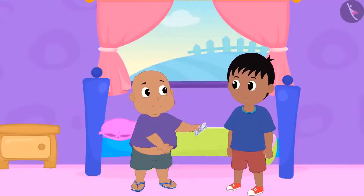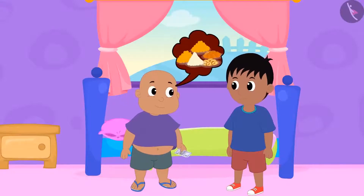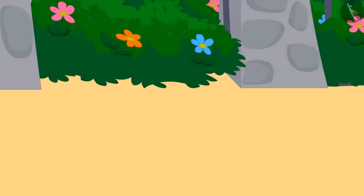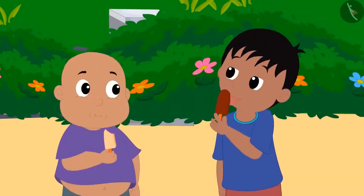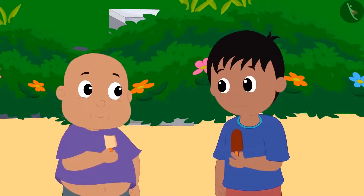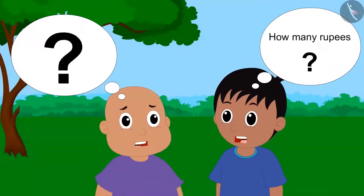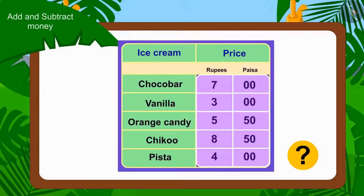Raju and Bablu together have collected Rs. 100 and decided to eat delicious things today with that money. Both of them have come to Babban's ice cream stall first. Babban handed them the menu card of his stall, which has various ice cream names and their prices. Raju and Bablu first ate one choco bar ice cream and one vanilla ice cream, then shared one orange candy. Now they are thinking how much they have to pay to Babban. Kids, can you help them?